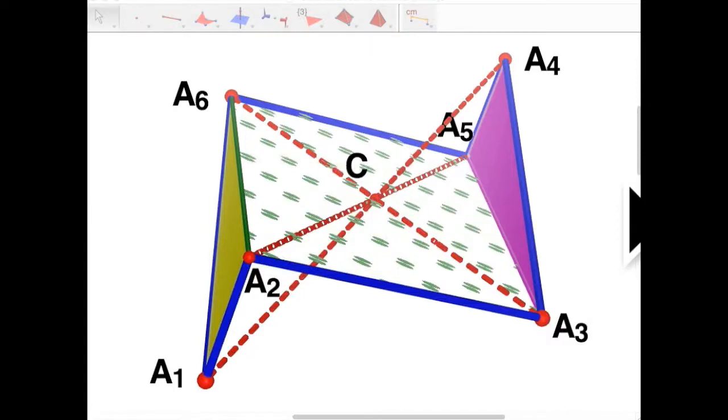Here we have a spatial 3D hexagon A1, A2, A3, A4, A5, A6,